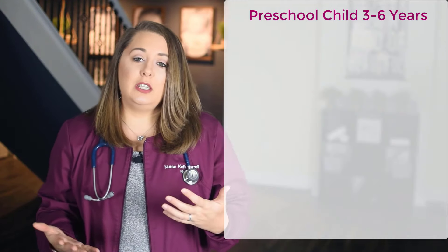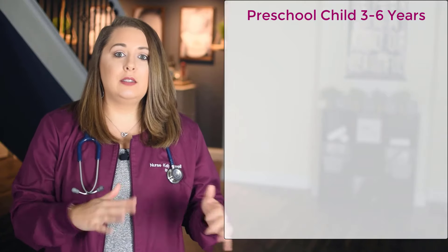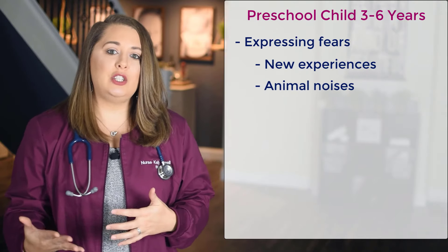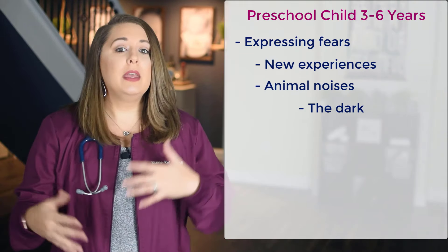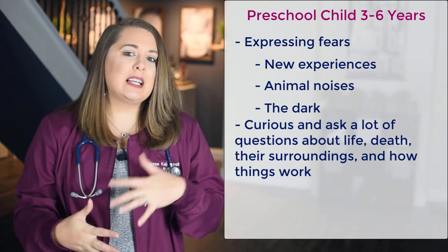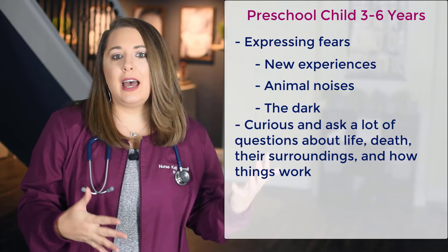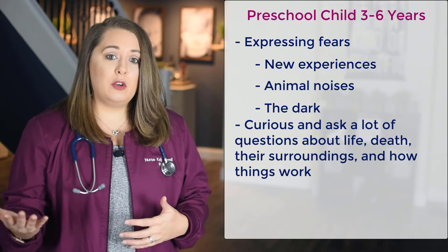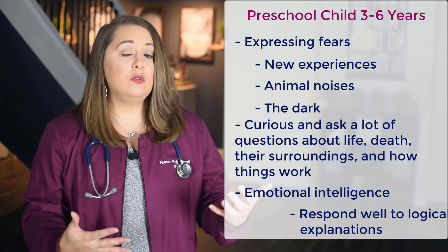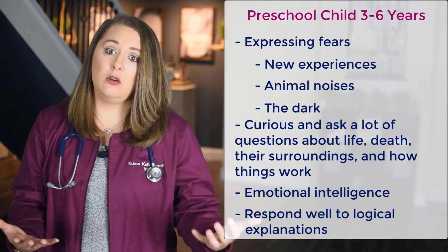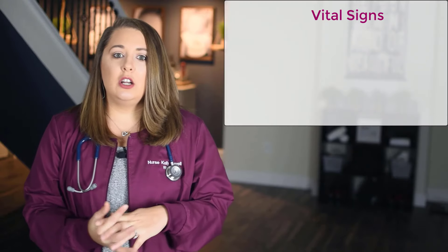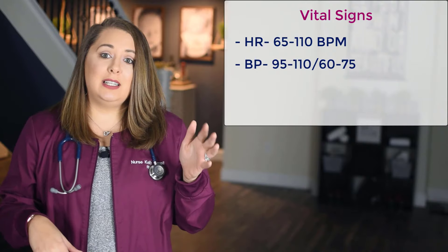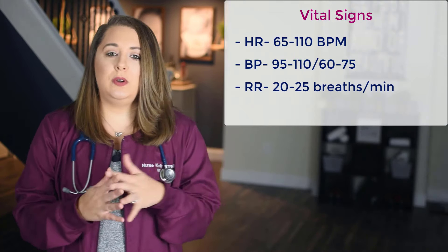Moving on to the preschool child, ages three to six years. During this stage, children may start expressing fears of new experiences, animal noises, and being afraid of the dark. They're usually very curious and ask a lot of questions about life, death, their surroundings, and how things work. They are developing their emotional intelligence more, so they respond really well to logical explanations. Vital signs: heart rate 65 to 110, blood pressure 95 to 110 over 60 to 75, and respiratory rate 20 to 25.